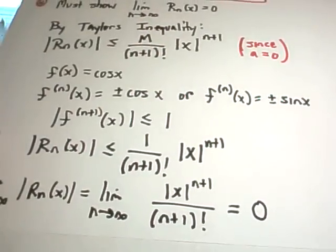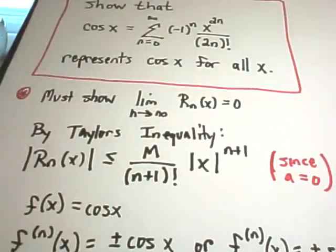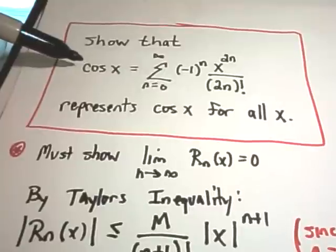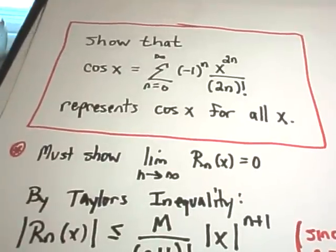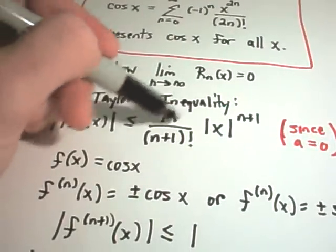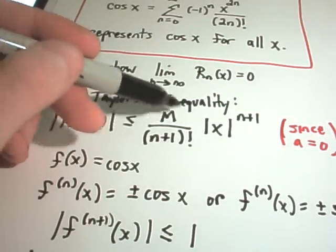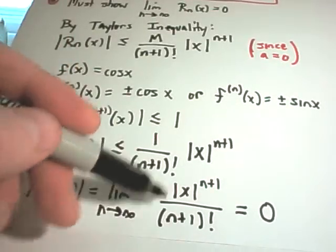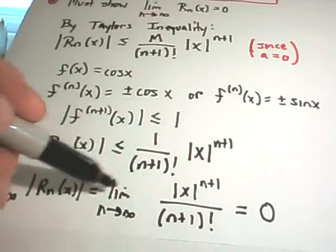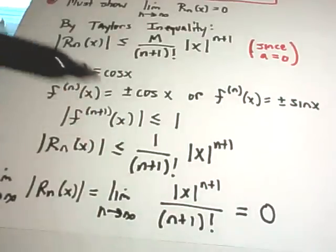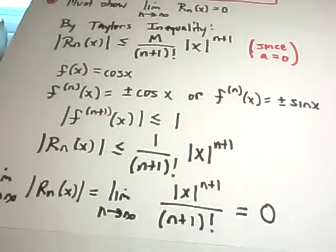Since we've shown that the limit as n goes to infinity of R sub n of x equals zero, we've now justified that this Maclaurin series representation for cosine of x is actually valid for all values of x. This is an easy one because the derivative is easy to bound — it's always smaller than one — and then it's just a matter of taking this limit. I encourage you to pick a value for x and start computing this limit to convince yourself that it turns out to be zero.